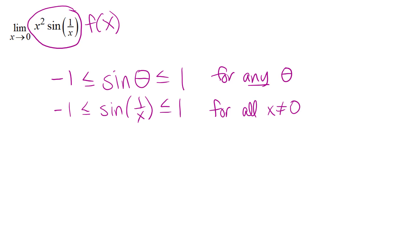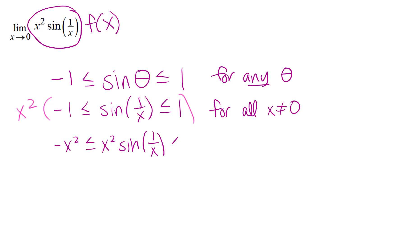I now have a sandwich with sin(1/x) trapped between -1 and 1, but I don't yet have the squeeze part — those two outer functions aren't squeezing to the same place. Also, the function in the middle isn't quite the right one yet. Conveniently, I can multiply through the inequality by x², which is always positive, so the inequalities are preserved. Multiplying through gives: -x² ≤ x²·sin(1/x) ≤ x². Now I have the correct f(x) function in the middle, sandwiched between g(x) = -x² and h(x) = x².